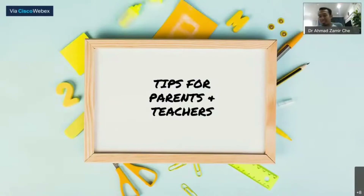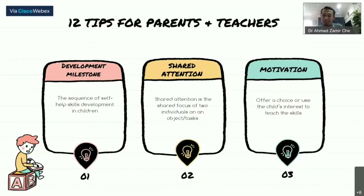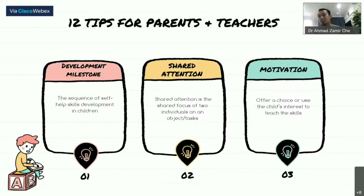To the parents and teachers out there, here is a simple tip I can provide. The first one is: in order to improve the self-help skill of children with autism spectrum disorder, you have to teach the skill according to self-help skill development. We need to follow that developmental order, so don't teach advanced skills before they are ready, because it will create frustration for the child.